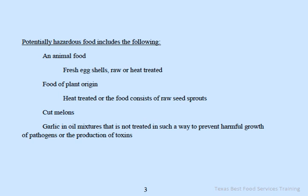Potentially Hazardous Food includes the following: animal food such as fresh egg shells, raw or heat-treated food of plant origin, heat-treated, or food that consists of raw seed sprouts, cut melons, and garlic and oil mixtures that are not treated in such a way to prevent harmful growth of pathogens or the production of toxins.